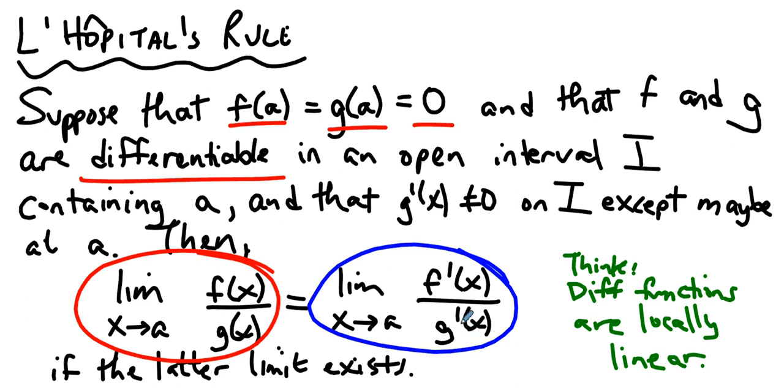So, we take a look at their slopes, and if the quotient of the slopes is this limit that can be found, then the quotient of the functions approaches that same limit. That's the idea. That's what's going on.